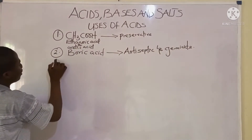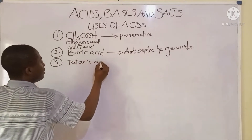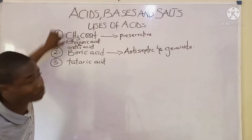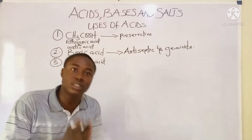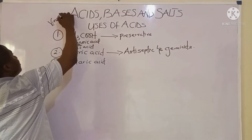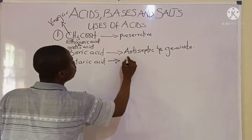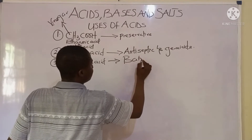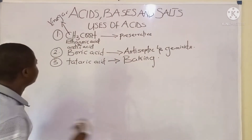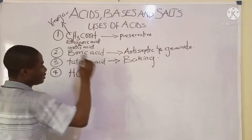Moving on to another acid — tartaric acid. It should also be noted that ethanoic acid is found in vinegar. Now for tartaric acid, it is used for baking.